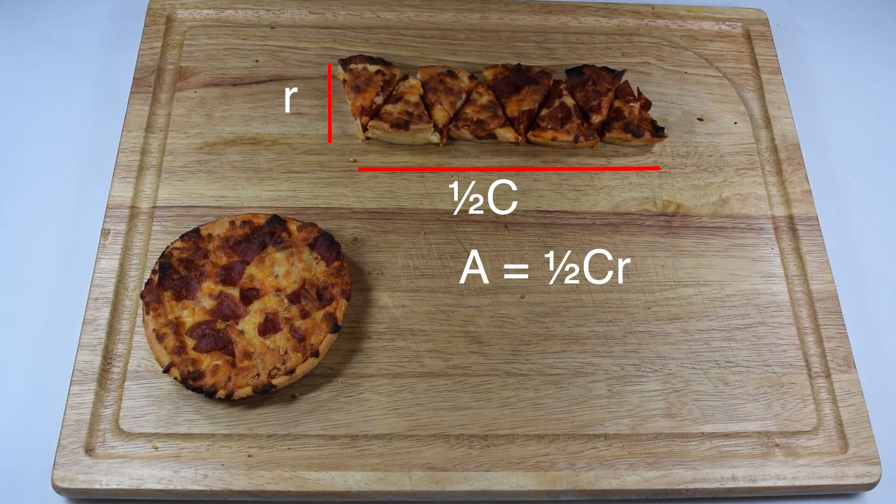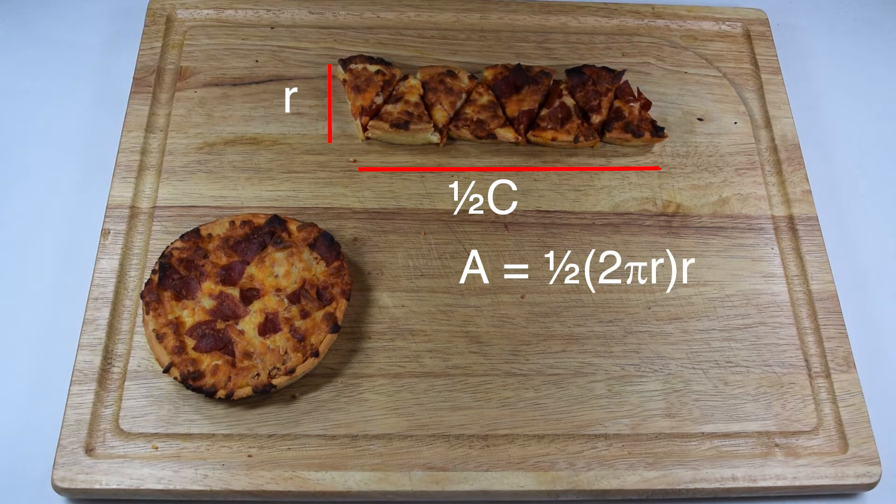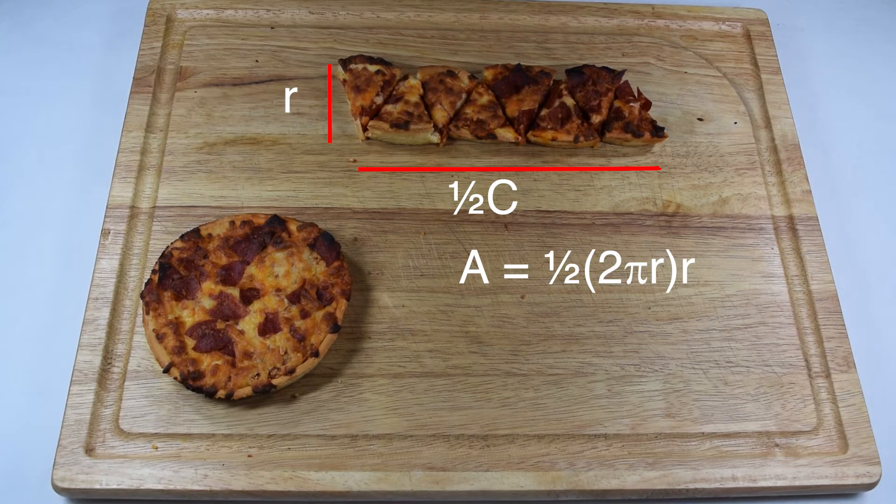We now need to call upon what we know about circumference. One way to find the circumference of a circle is by doing 2 times pi times radius. So we're going to substitute that in now. This means our equation is now one-half times 2 times pi times radius times radius.